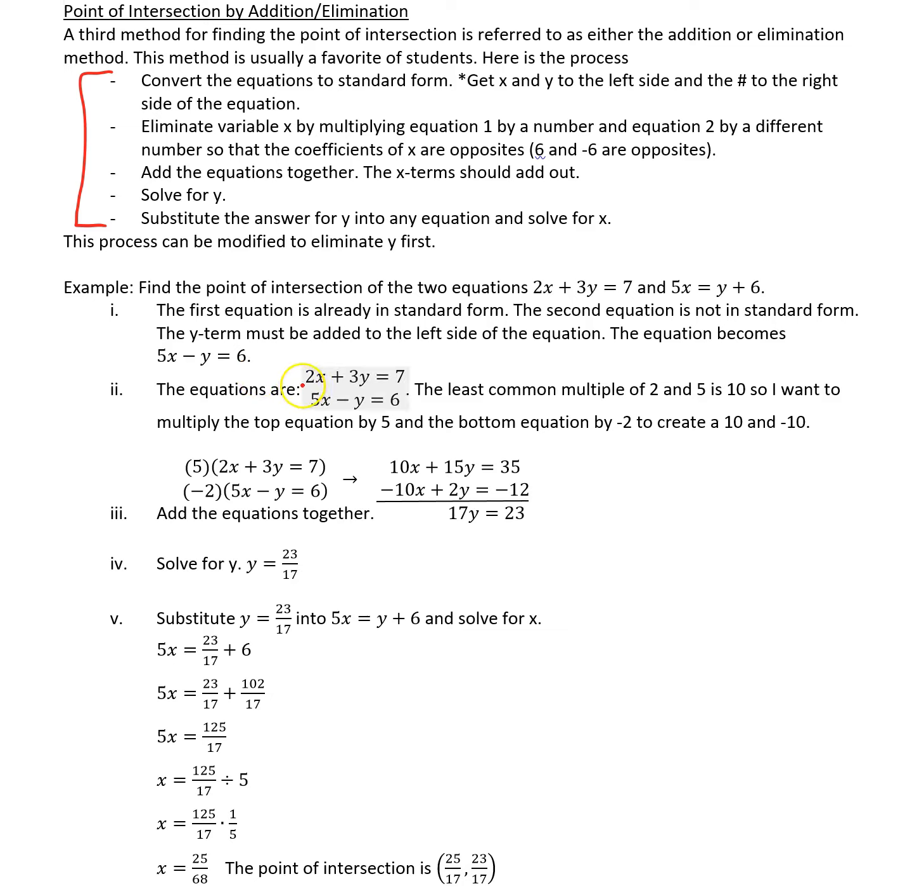Now the two equations are stacked on top of each other in this method, where the x terms are first, then the y terms, the equal sign, and our constant. We're going to focus on the x terms. Right now they are 2x and 5x. We want to make those coefficients to be opposites, so we'll focus on the least common multiple. The least common multiple between 2 and 5 is 10. So I want to change one of these to be a 10 and one to be a negative 10. I'm going to do that by multiplying the top equation by 5 and the bottom equation by negative 2.